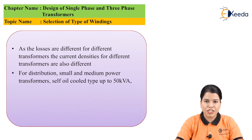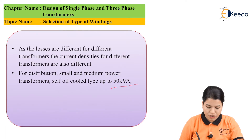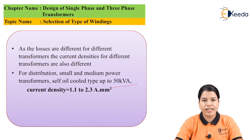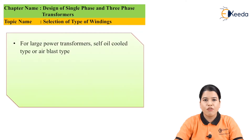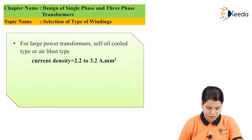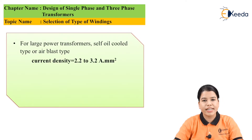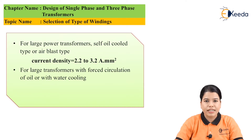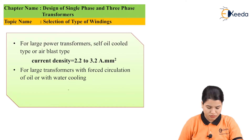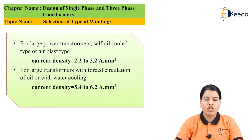For distribution type transformers with a rating up to 50 kVA, the value of current density is in the range of 1.1 to 2.3 ampere per mm². For large type transformers, the value of current density is between 2.2 to 3.3 ampere per mm². For large transformers with water cooling, the value of current density is between 5.4 to 6.2 ampere per mm².